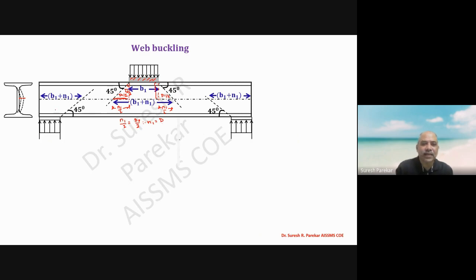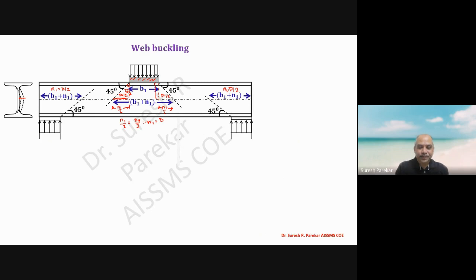At reactions, we have the bearing length on one side only, making a 45-degree angle, so n1 = d/2. Therefore the effective area at support is (b1 + d/2) × tw. For reactions, dispersion is only on one side, so the n1 value is half that of an intermediate load. The effective length is 0.7 times the depth of web, and the cross-sectional area A = b1 × tw for a section parallel to the web.